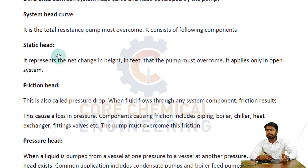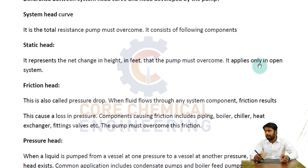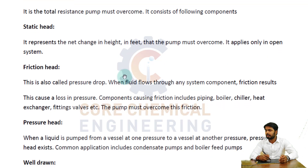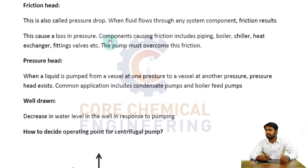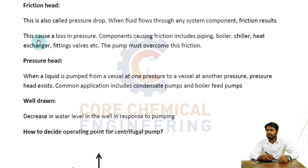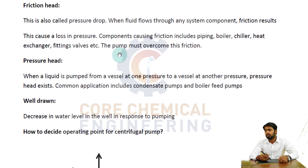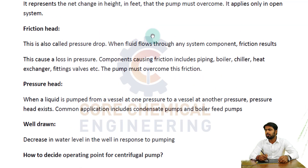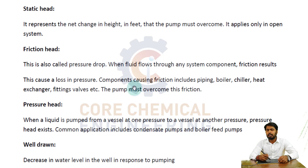Static head represents the net change in height in feet that the pump must overcome. It applies only in open systems because in a closed system static head would be zero. Friction head — also called pressure drop — occurs when fluid flows through any system component. Friction causes loss in pressure, and the components causing friction include piping, boiler, chiller, heat exchanger, fittings, valves, etc. The pump must overcome this friction as well.